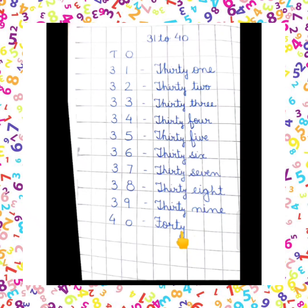So aapke number names 1 to 40 complete ho gaye hain. You have to write down the same on your fair notebook, and beta ji, revise the same on rough notebook — you have to write and practice. Right, bache?